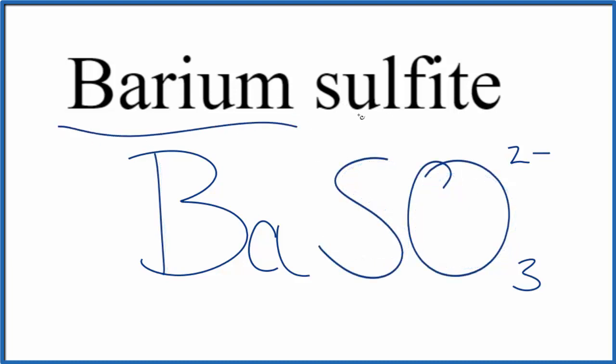Since barium is a metal and the sulfite ion is made up of a group of nonmetals, this is an ionic compound, so we have to take charge into consideration.